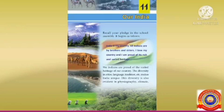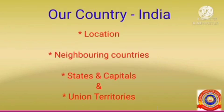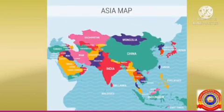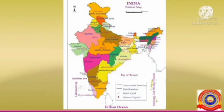This chapter will help you to know more about the diversities of India. First, we will study about location, neighboring countries, states and capitals, and union territories in India. We have already learned about continents. India is located in the southern part of Asia.